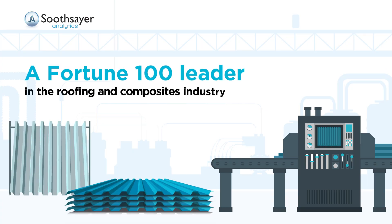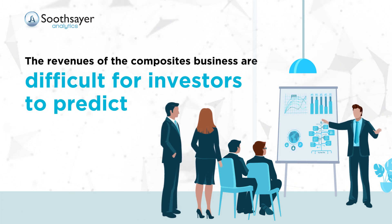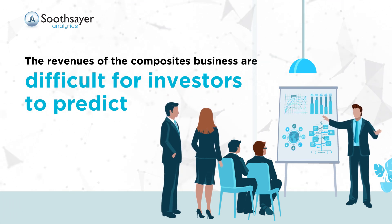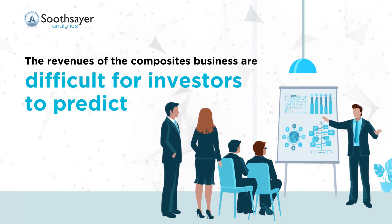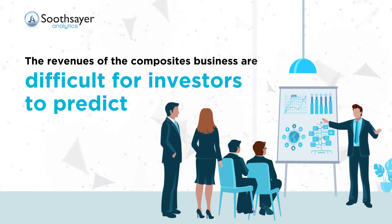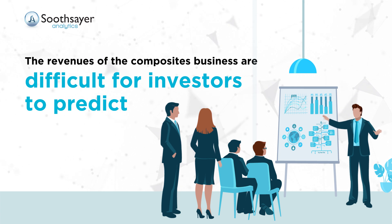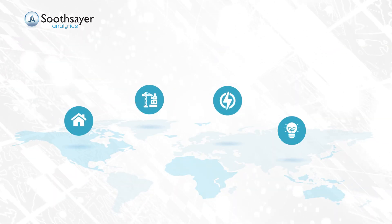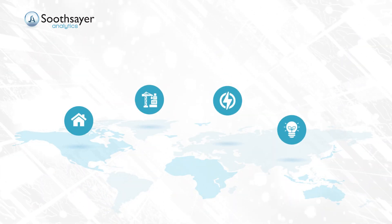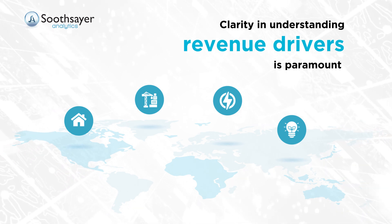Our client is a Fortune 100 leader in the roofing and composites industries. The revenues of a composites business are notoriously difficult to predict for an investor. There are several macroeconomic and end market indicators that could influence the sales of a composites manufacturer with operations spanning several continents and verticals. Clarity in identifying indicators that drive revenue was paramount.